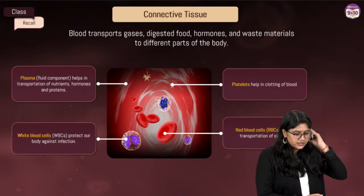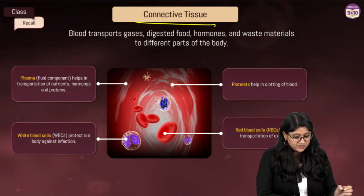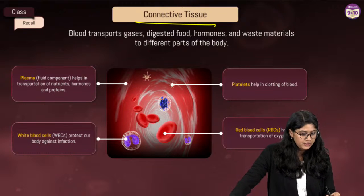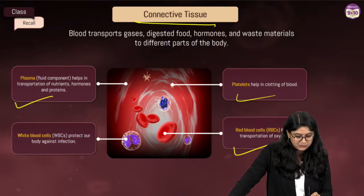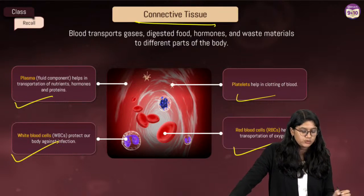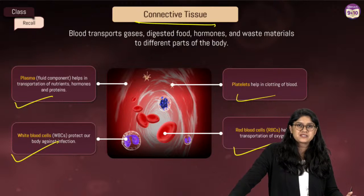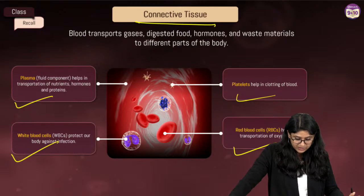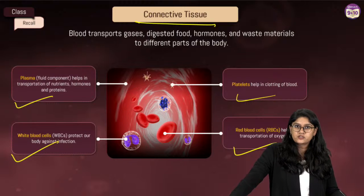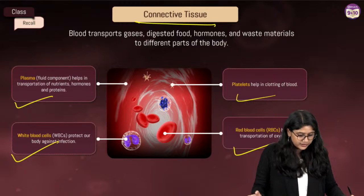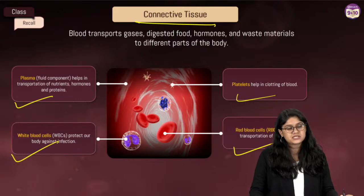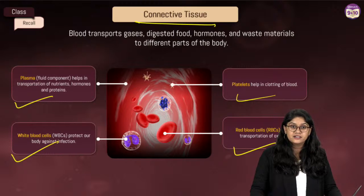Blood is a connective tissue that plays a very important role in transportation. We have plasma, platelets, red blood cells, and WBCs. RBCs carry oxygen; platelets help in clotting; plasma is fluid containing nutrients and hormones; WBCs act as protectors.